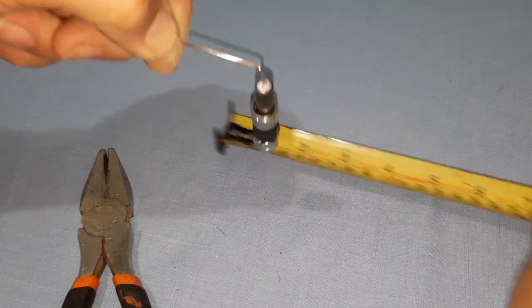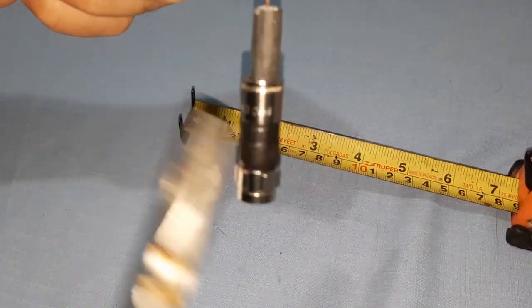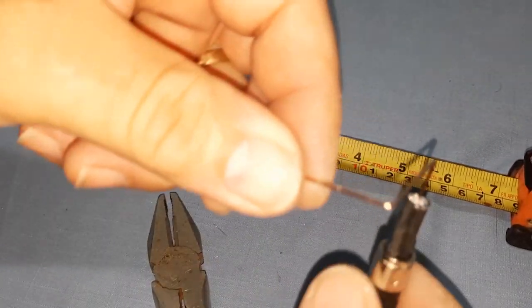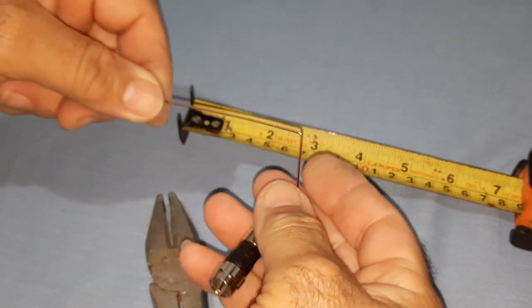Mark and bend at 3 cm. Next, measure another 3 cm from the previous bend point and make a mark. Bend the conductor again at this point. Note that this bend is in the opposite direction to the previous one.